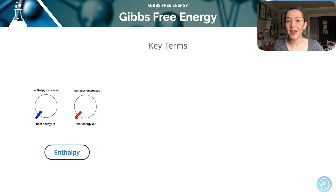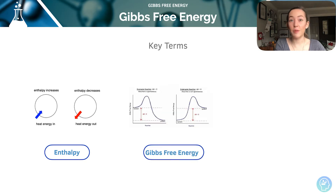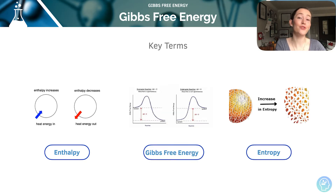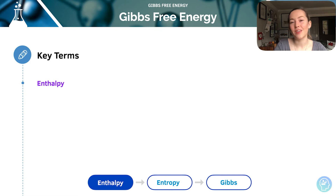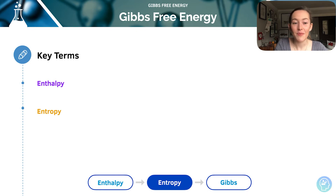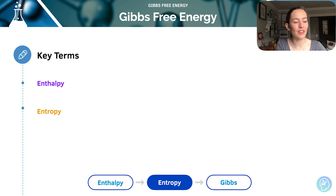The key terms that are useful today are enthalpy, Gibbs free energy, and entropy. Make sure you've covered our lessons on both enthalpy and entropy before we move on to this topic. As a reminder: enthalpy is the heat exchange between the system and the surroundings at constant pressure during a chemical reaction. Entropy, which we've just studied, is a measurement of the disorder and randomness of a system, and we've learned how to calculate a value for that as well.